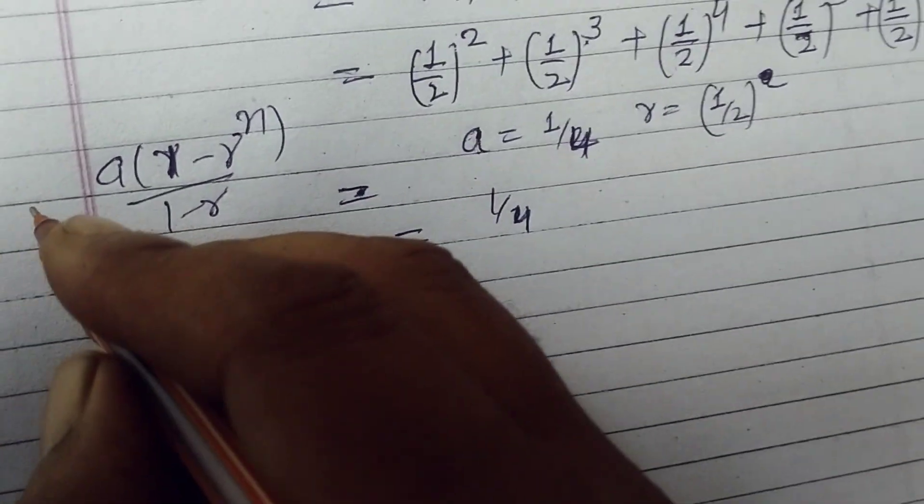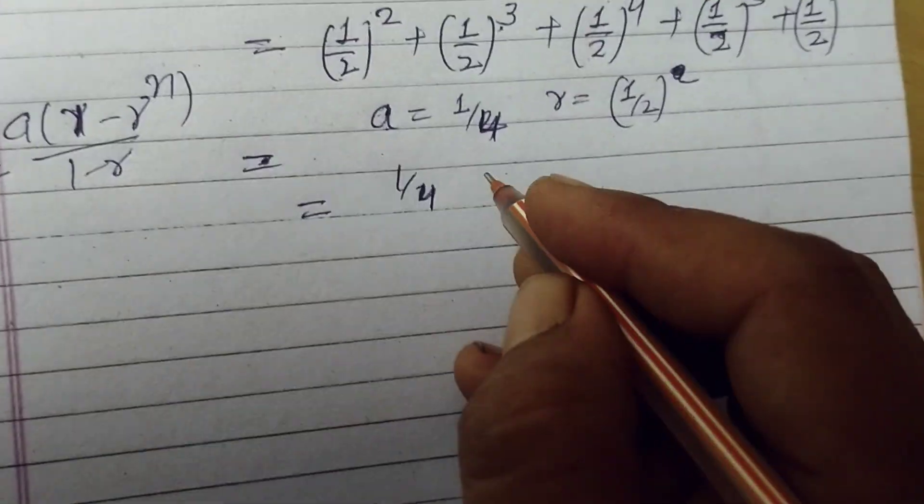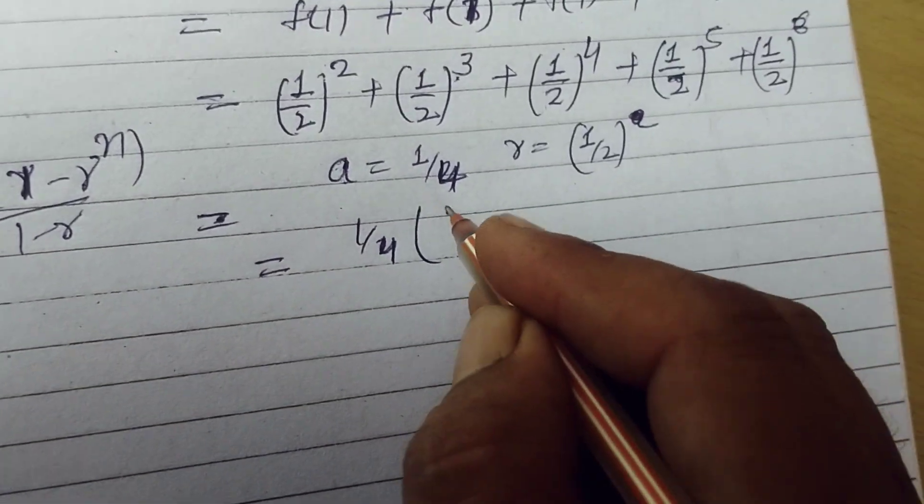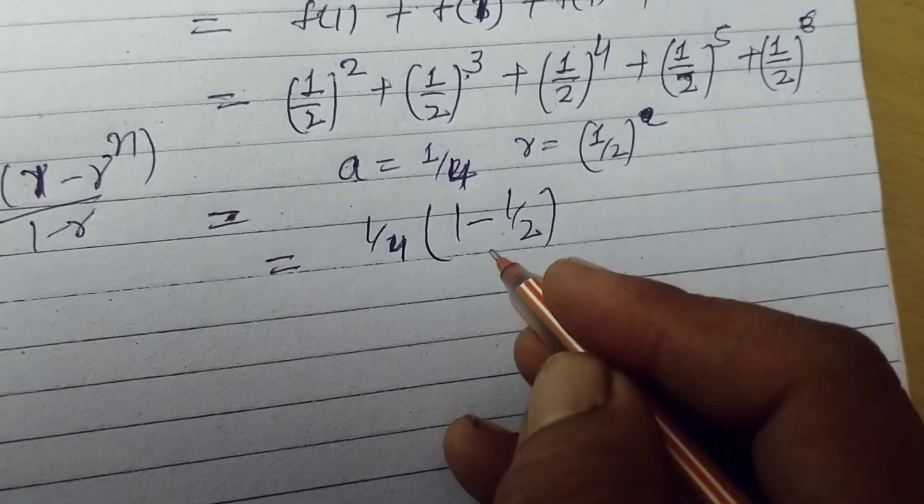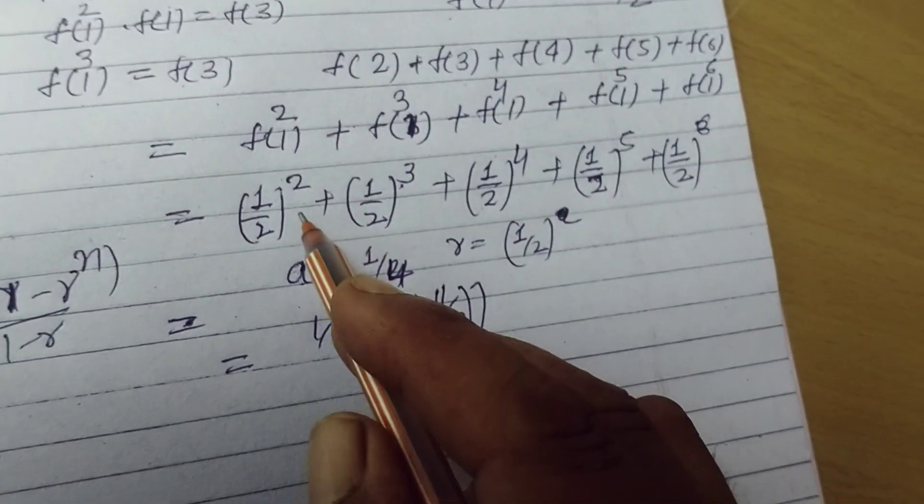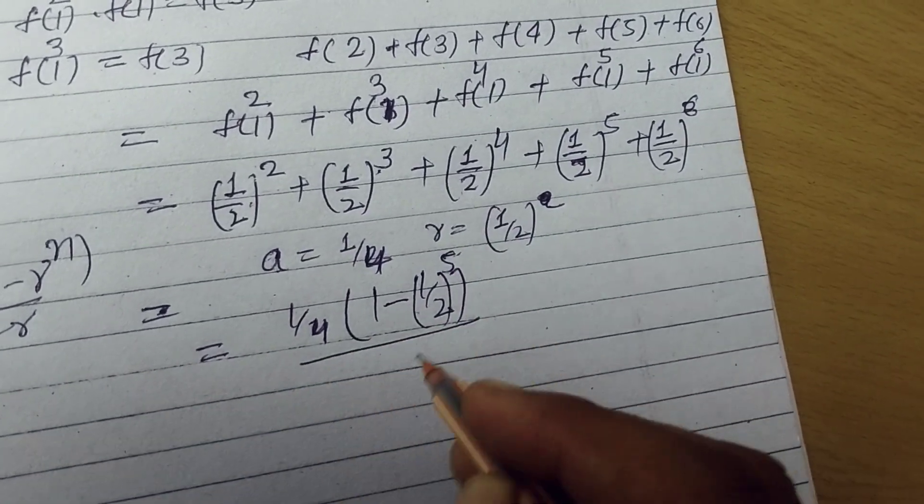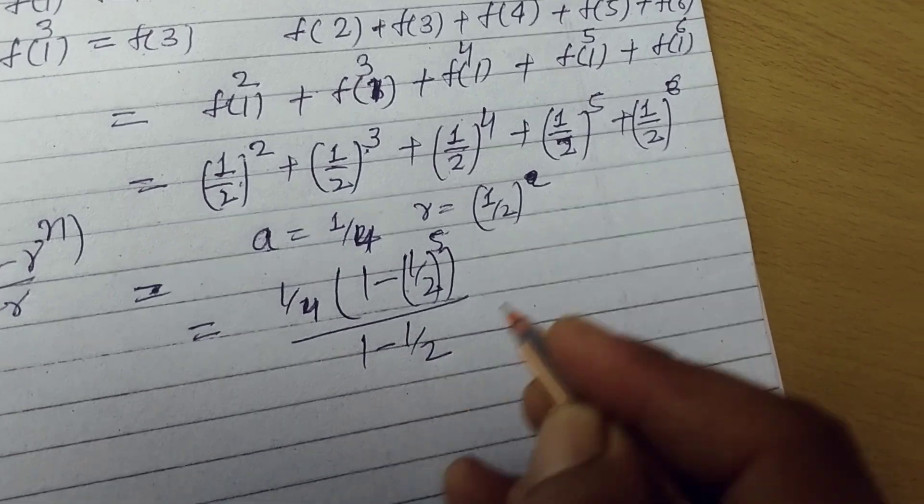This is the sum of geometric progression. So we take 1 by 4, 1 minus 1 by 2 to the power n. n is 5, these are 5 terms, upon 1 minus r.